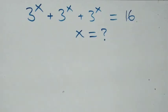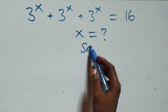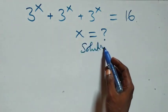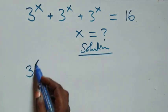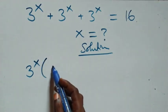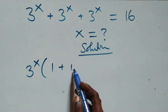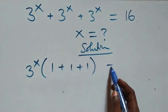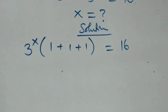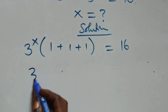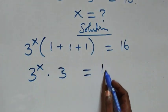We're going to solve a nice exponential equation. From what we have here, we can factor 3 raised to πx out. What we have becomes 3 raised to πx into brackets, one plus one plus one, which equals sixteen. That is, 3 raised to πx times 3 equals sixteen.